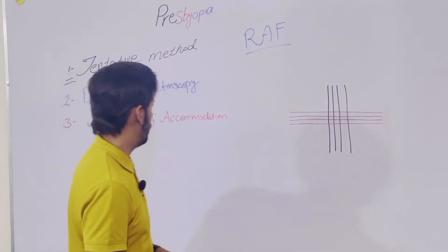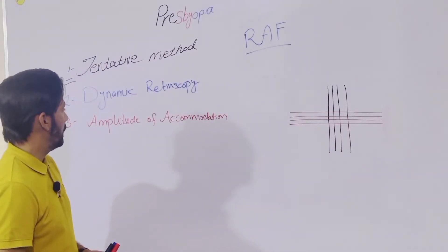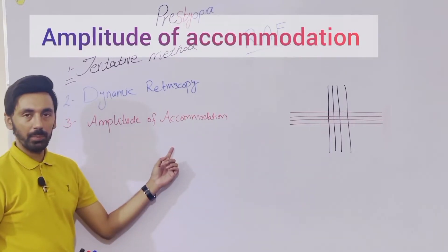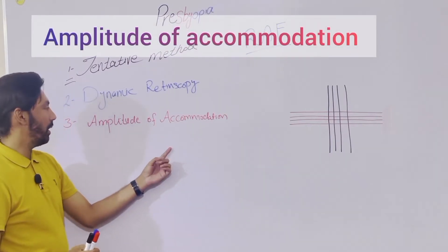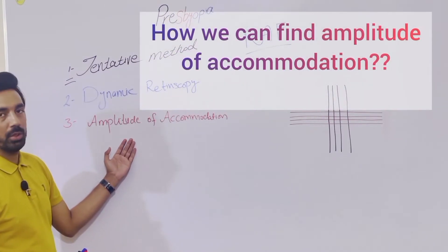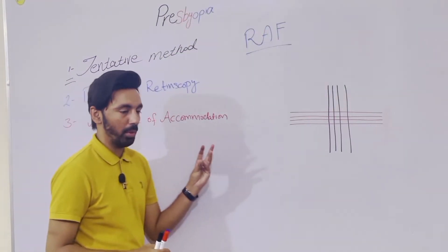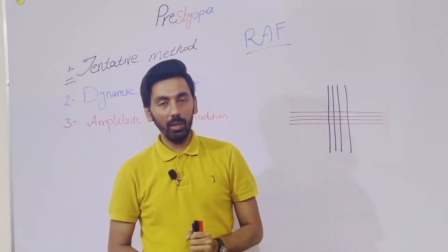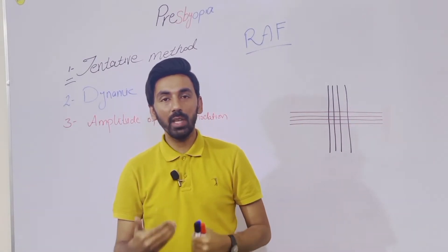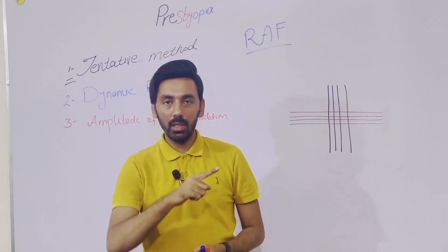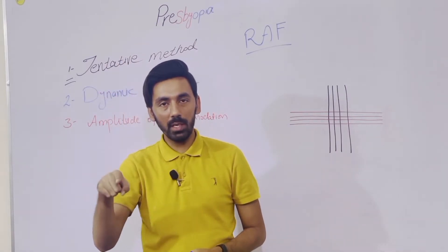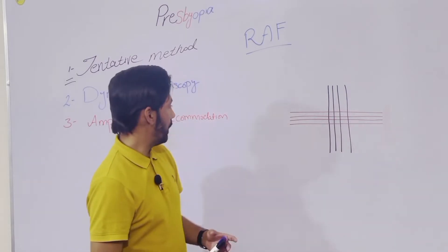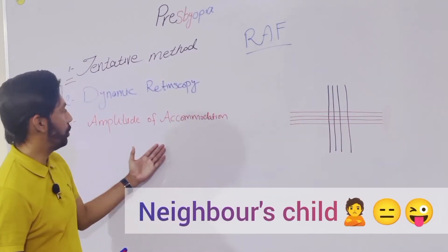The third part is called the amplitude of accommodation — how we can find the near end and how we can find the presbyopic correction with the help of the amplitude of accommodation. The question is: how can we find the amplitude of accommodation? The amplitude of accommodation is the ability of an eye — how much that eye can exert accommodation — and the peak of accommodation in that specific eye is called the amplitude of accommodation.